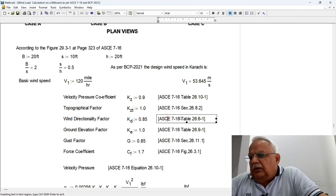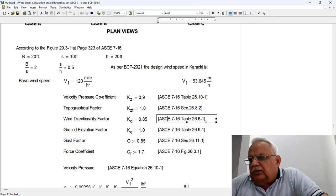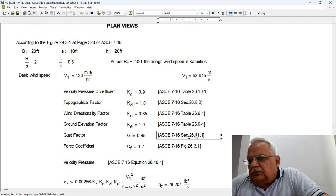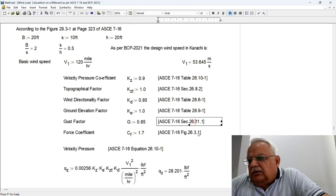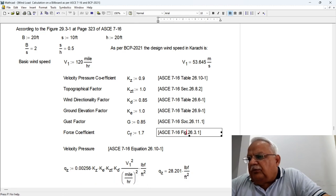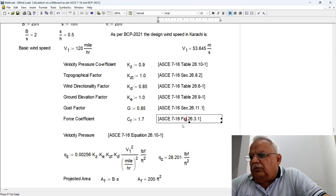Topographic factor Kzt is 1, and it is as per section 26.8.2. Wind directionality factor, this is Kd, this is equal to 0.85, and this is from table 26.6-1. Ground elevation factor is taken as 1, that is Ke equals 1, and it is from table 26.9-1. Gust factor is taken as 0.85 and it is coming as per section 26.9-1.